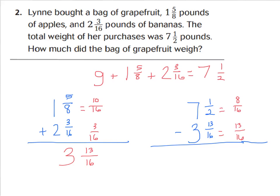Now we can subtract. Eight-sixteenths minus thirteen-sixteenths — we can't do that, so we have to regroup. The seven becomes a six, and we add sixteen-sixteenths to our eight, making twenty-four-sixteenths. Now we can subtract: twenty-four minus thirteen is eleven-sixteenths, and we have three wholes. So the grapefruit weighs three and eleven-sixteenths pounds.